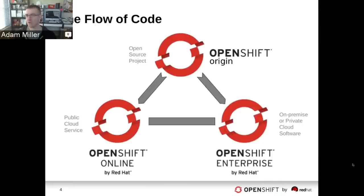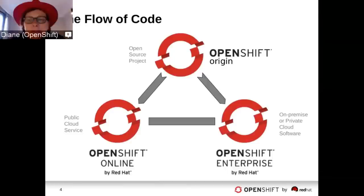Anything that comes downstream is shared back and forth between online and enterprise. We have different release cadences: Online, we release to production every three weeks, whereas enterprise averages about every six months. Enterprise releases when they're ready. With online, we have planned releases, and if features aren't ready, they just get cut. But all of the code is always upstream first — you'll hear me hammer that point as I go through.